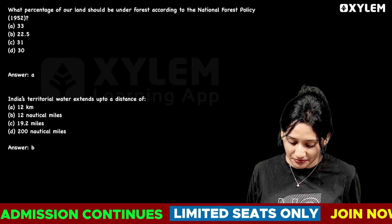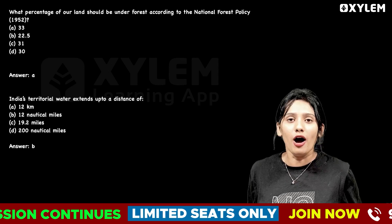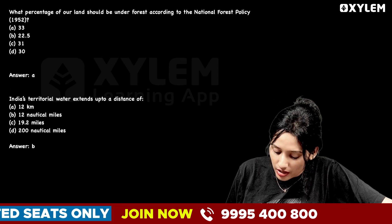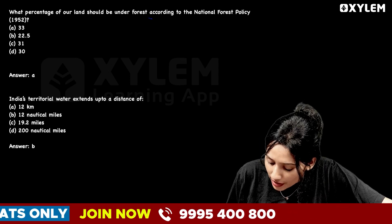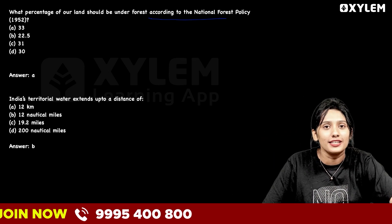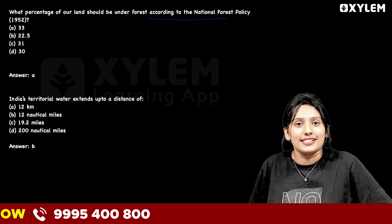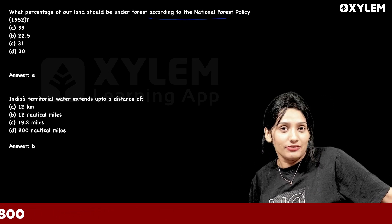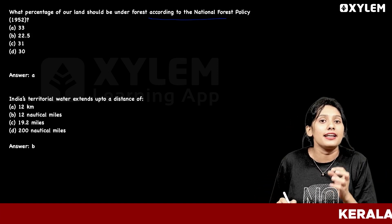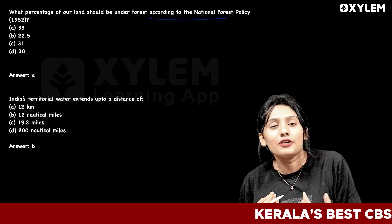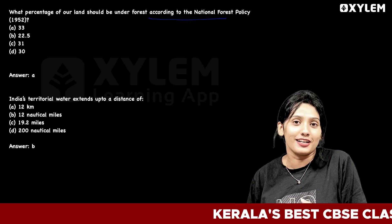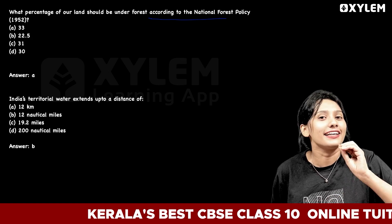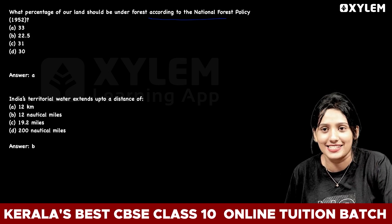First question: what percentage of land should be under forest? According to the National Forest Policy of 1952, the answer is 33%. Option A is the correct answer.